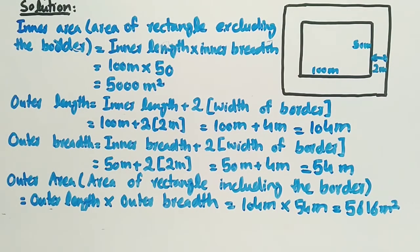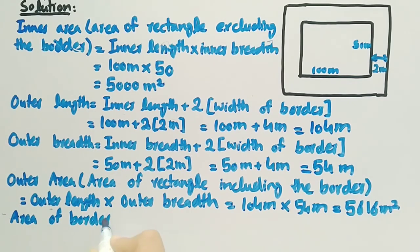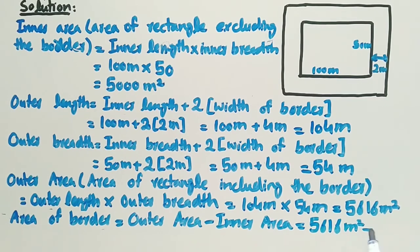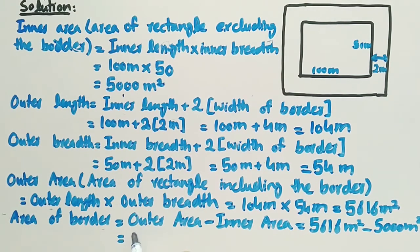Finally, the area of the border is equal to outer area minus inner area. Substituting the values, outer area 5616 meter square minus inner area 5000 meter square. Subtracting 5000 from 5616, we get 616 meter square. So the area of the border is 616 meter square, and this is the solution to the given question.